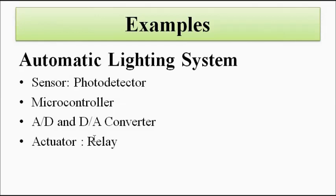Depending on various other requirements — for example, in certain parts of the house we want manual control and in some parts we want automatic control — we can program it accordingly. This automatic lighting system is also used for street lights and in home automation.